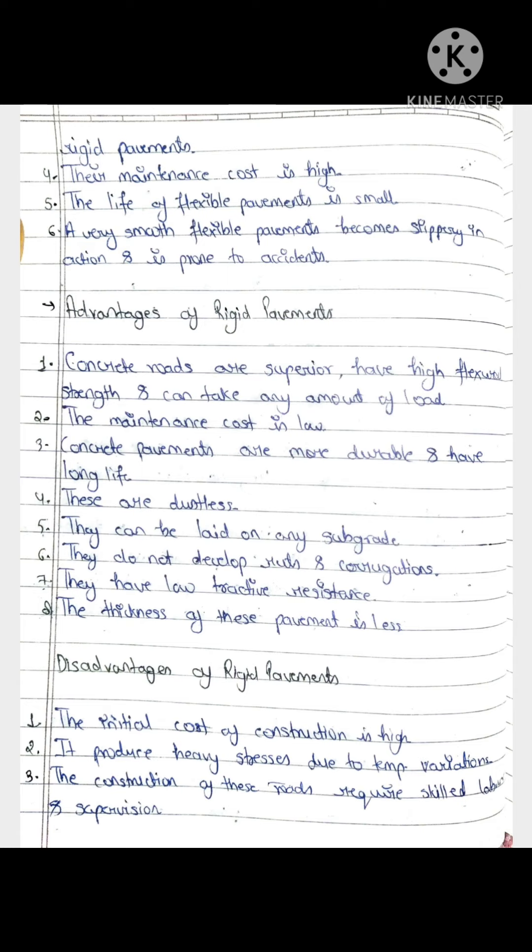The thickness of flexible pavement is more and it is prone to accident. If the flexible pavement is smooth then it will slip, and vehicles are more prone to accident.